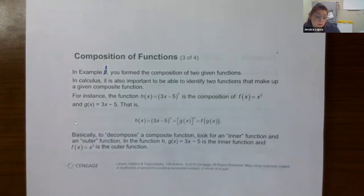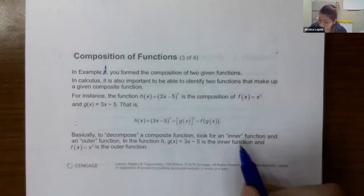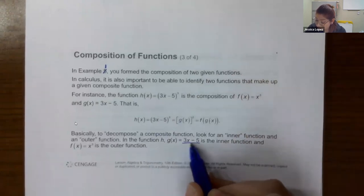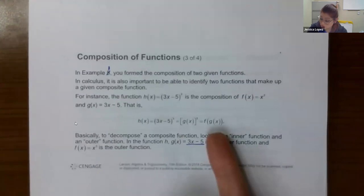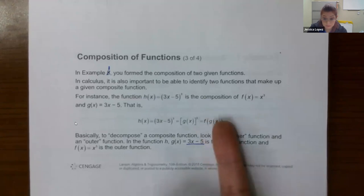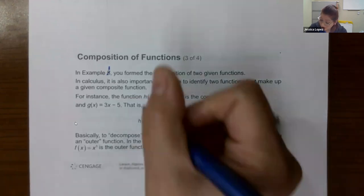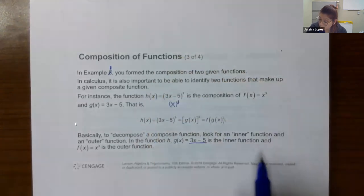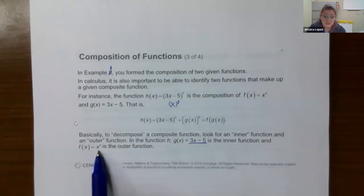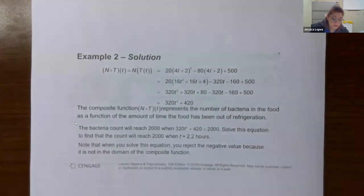The best way to explain this is with the terms 'inner function' and 'outer function.' The inner function is very easy to identify — it's the 3x − 5. So I would call g(x) my inner function, since g is on the inside of these parentheses. If you want to know what the outer function is, take what you had and replace the inner stuff with a big x. That's where they get that the outer function would be just x³.